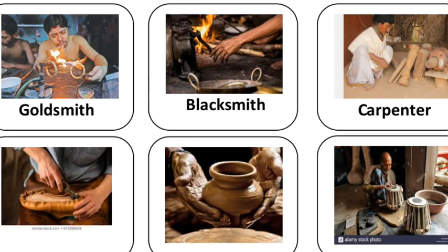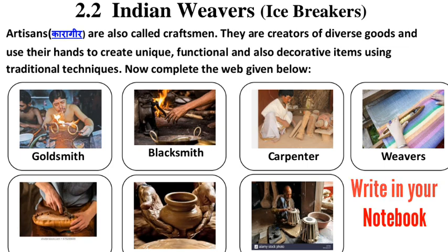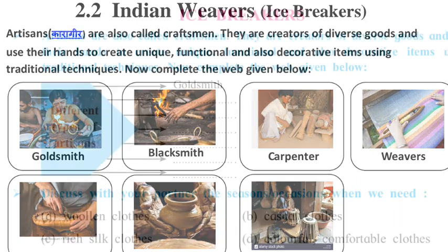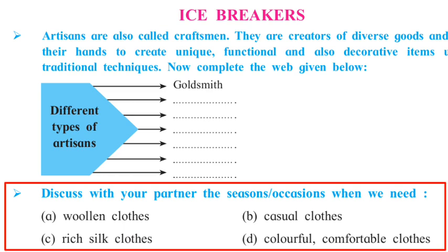For Activity 1, think of different types of artisans like weavers — for example, goldsmith, blacksmith, carpenter, shoemaker, potter, and many more. Write them in your notebook. For Activity 2, discuss with your partner the seasons and occasions when we need woolen clothes, casual clothes, rich silk clothes, and colorful comfortable clothes.